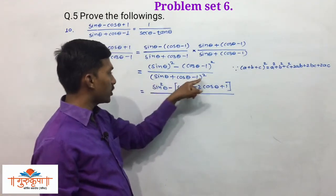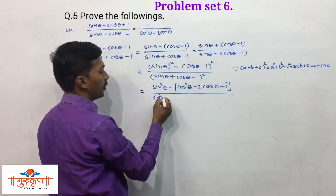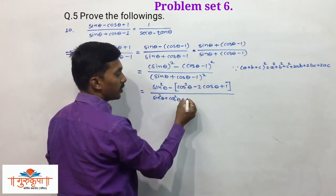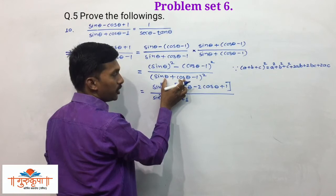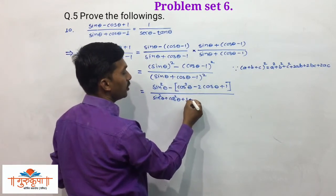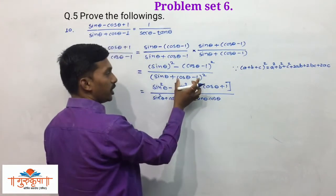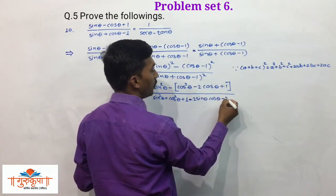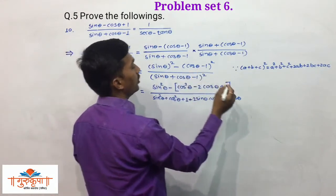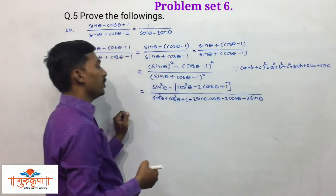We write the expansion of (sinθ + cosθ - 1)²: sin²θ + cos²θ + 1 (first, second, third term squares), plus 2·sinθ·cosθ (product of first and second), minus 2sinθ (product of first and third, twice), minus 2cosθ (product of second and third, twice).